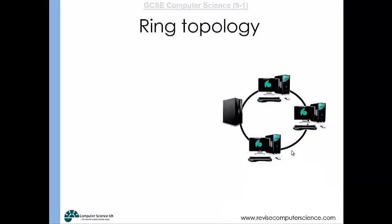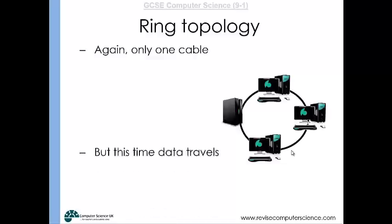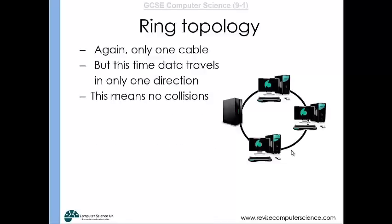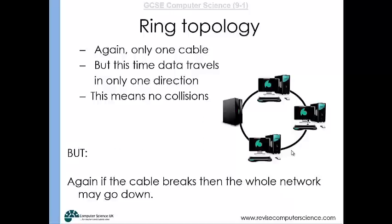A ring topology uses one main cable but data travels in just one direction, which means there are no data collisions. However, if the cable breaks, the entire network will go down.